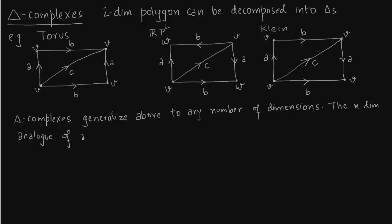For n dimensional space, the analog is an n simplex. What is an n simplex?